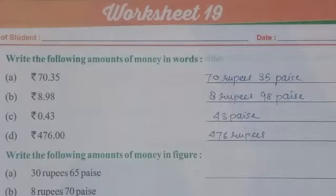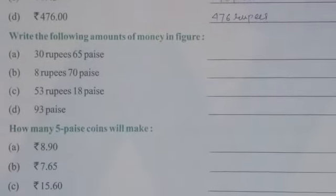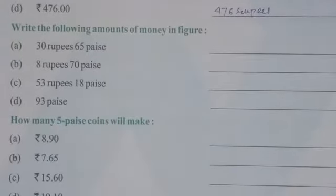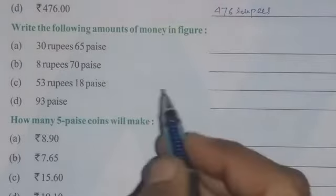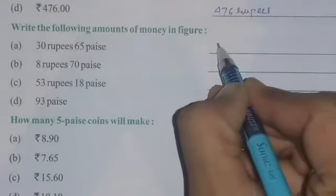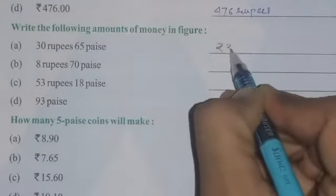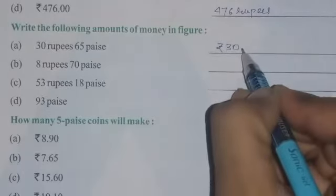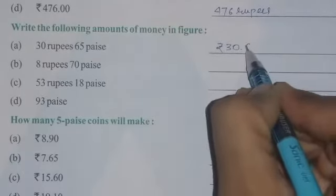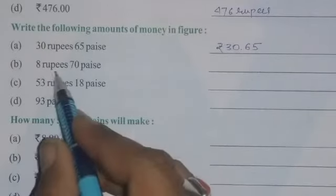Question number 2 is: write the following amounts of money in figures. Now we have to write this in figures. 30 rupees 65 paise — first, write the rupees symbol, then 30 rupees, put a decimal point, and then write 65.